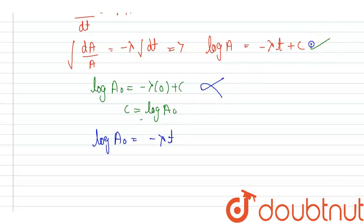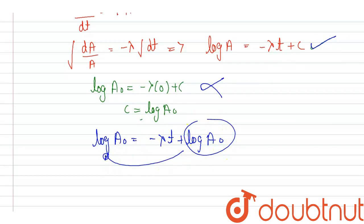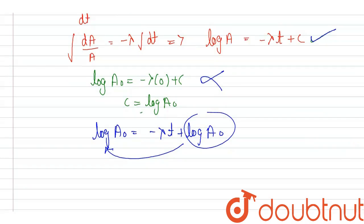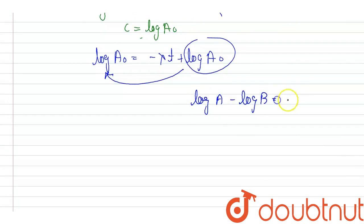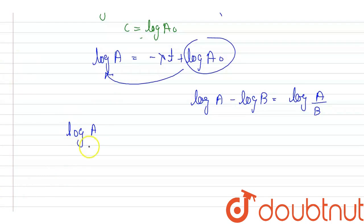Bringing log A0 to the left-hand side and using the log property that log A minus log B equals log(A upon B), we get log(A upon A0) equals minus lambda T.